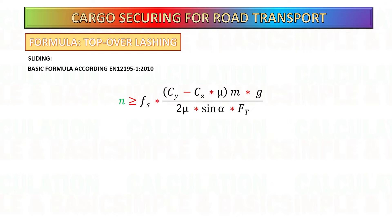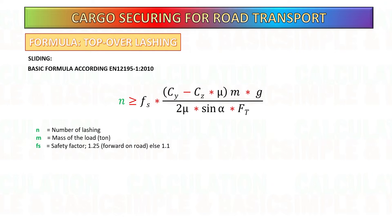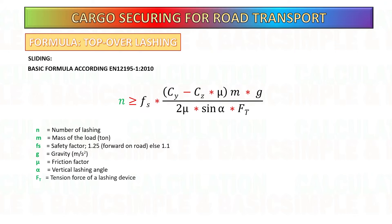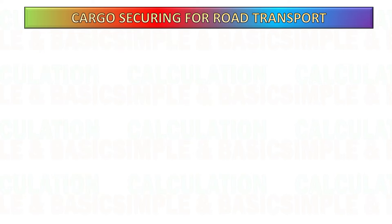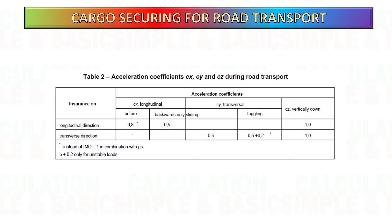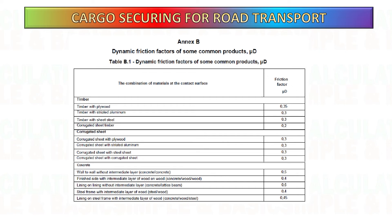This is the formula we will use for our calculation. This is the standard acceleration coefficients table for road transportation as per the mentioned guideline. This is the dynamic friction factor table based on the material type of cargo and trailer.